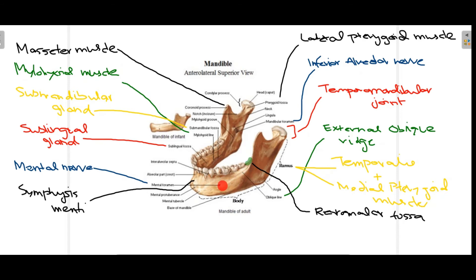The mental foramen is present roughly between the first and second premolars. The inferior alveolar nerve passes through the mandibular foramen, then divides into the incisive branch and the mental branch. The mental branch exits at the mental foramen and supplies the teeth in that region.